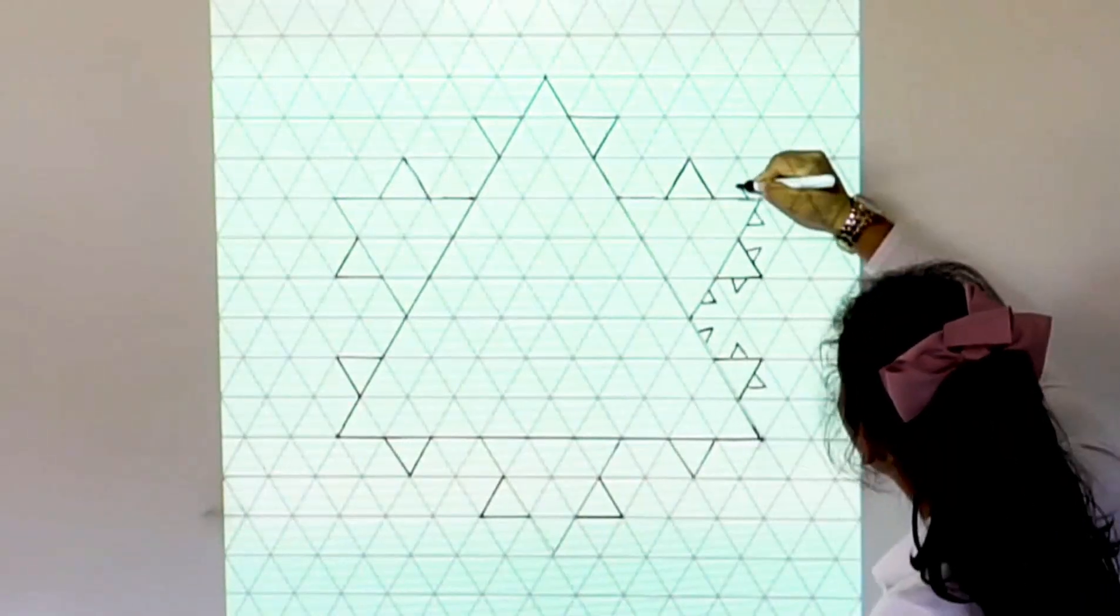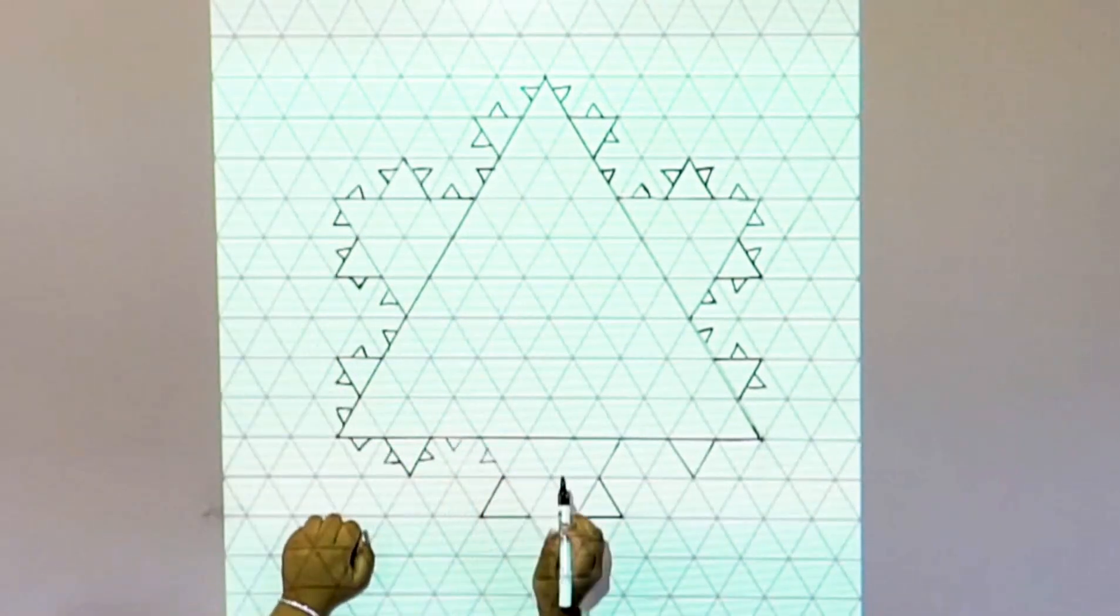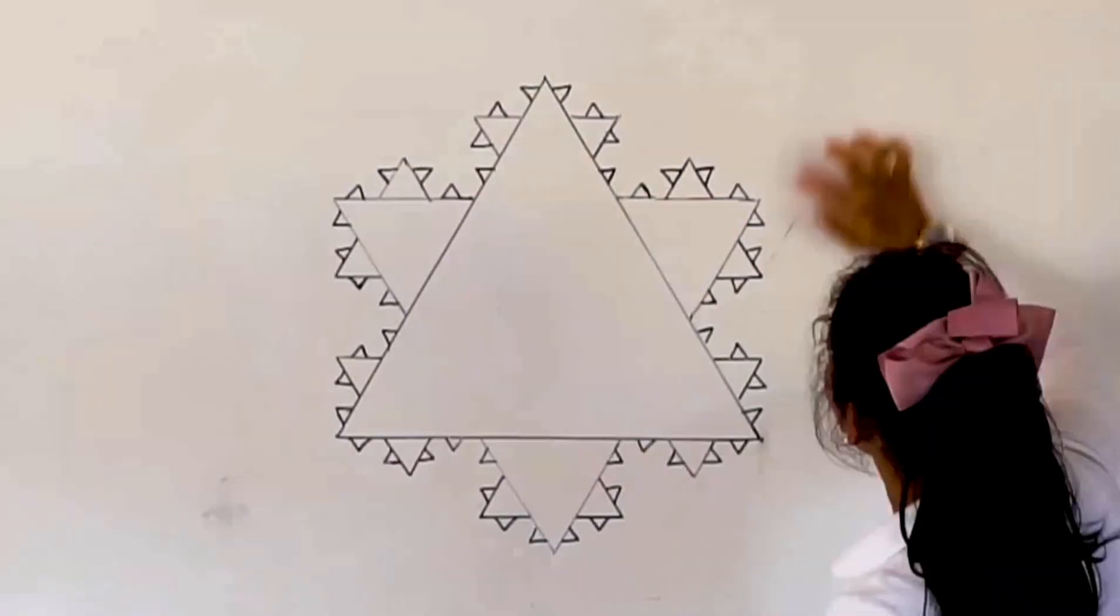In fact this can be done infinitely. In every iteration you add another equilateral triangle that's a third of the previous triangle's side length.